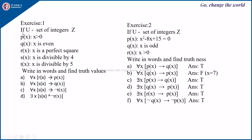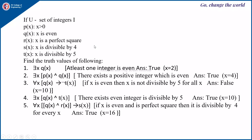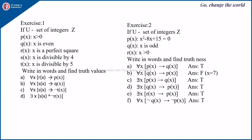Now suppose the universe is the set of integers Z with the same predicates; write the statements in words and find the truth values — you can try this as an exercise. The statements include: for all x, r(x) → p(x); for all x, s(x) → q(x). Also, with p(x): x² - 8x + 15 = 0, q(x): x is odd, r(x): x > 0 — write these in word format and find the truth values. The answers are given.